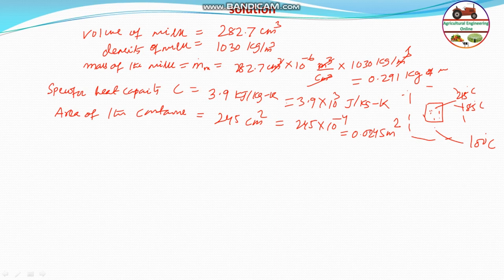Everything should be in m², joules, and kg for easy calculation. The overall heat transfer coefficient U is given as 1136 W/m²·K. Note that thermal conductivity is also given but is not required here, since the overall heat transfer coefficient already incorporates all internal resistances.